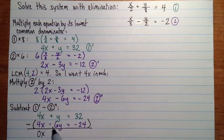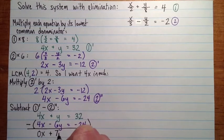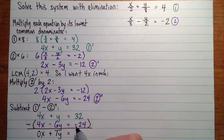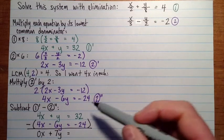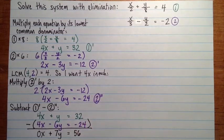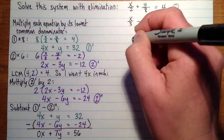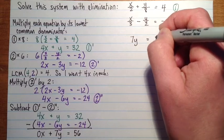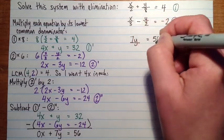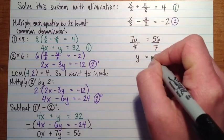y subtract negative 6y. So we're subtracting a negative, so we'll add it. So it's y plus 6y. So this is going to equal 7y. And here we've got 32 subtract negative 24, which is the same as 32 plus 24, so it's 56. Okay, continuing up top here, we had 7y equals 56. Now I'll divide by 7. We have y equals 8.